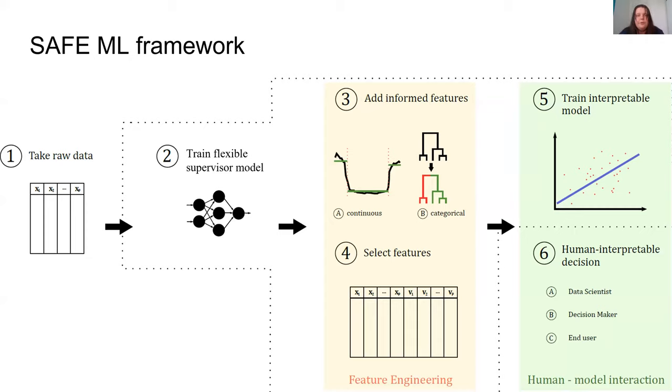The third step is to use Safe to find variable transformations. For continuous variables, we use the partial dependence profiles to find change points that allow the best binding of variables. For categorical variables, we use clustering to merge some of the levels.